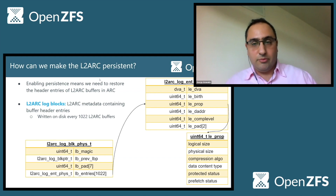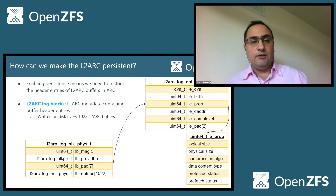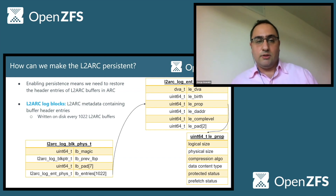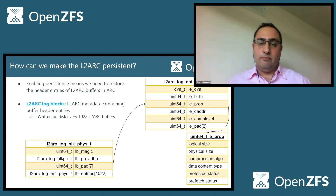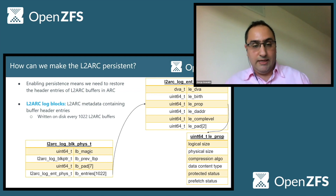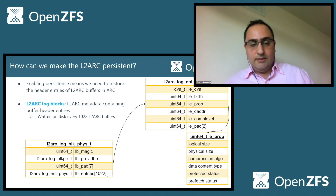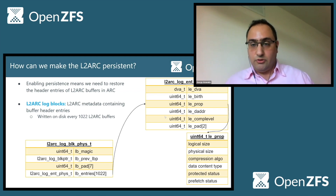So how did we make the L2ARC persistent? To enable persistence means that we need to restore the header entries of the buffers that reside in L2ARC in the ARC. And to do this, we implemented an on-disk structure called L2ARC log blocks. This is actually metadata that contains the buffer header entries. You can see their structure here — it has a magic value for determining endianness, it has a pointer to the previous log block, and then it has the actual header entries that are going to be restored in the ARC.